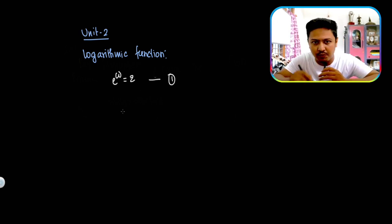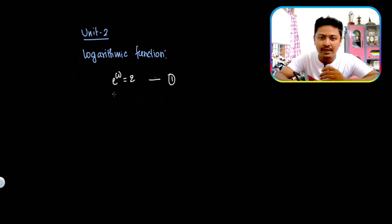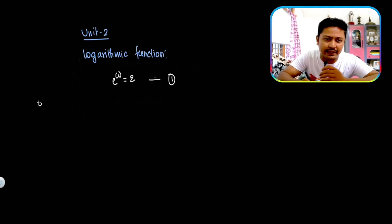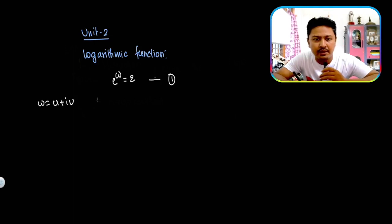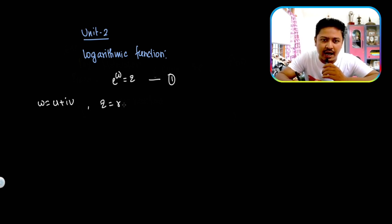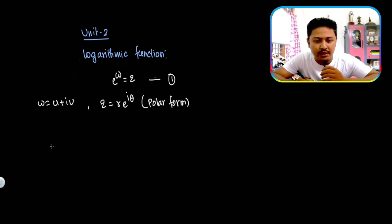Put it as equation number 1. In the complex field, we can define the function w equal to u plus i·v. And in a complex number, we can define z in polar form: R into e to the power i·theta. So this is the polar form of a complex number.